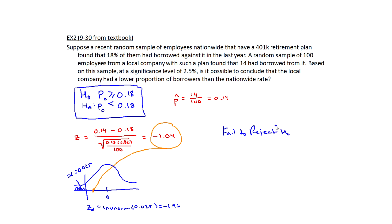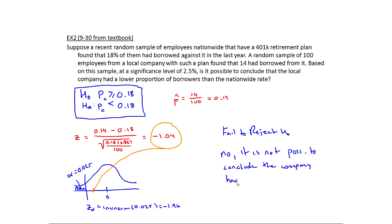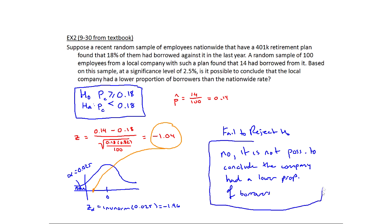It is not possible to conclude that the company had a lower proportion of borrowers. When interpreting, you want to make sure you're addressing the question that was asked — this is true whether you're doing your own research or a textbook question. We've now seen a right tail and a left tail. Let's take a look at a two-tail test.